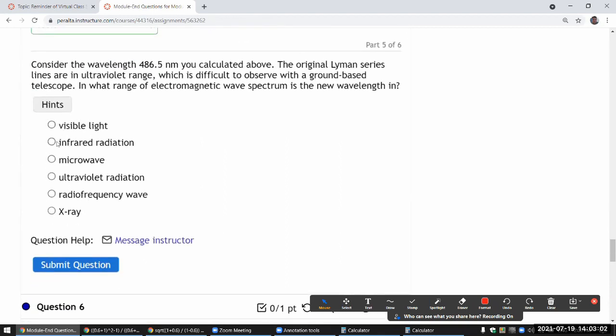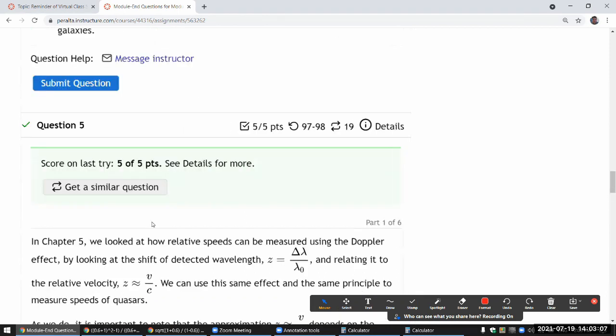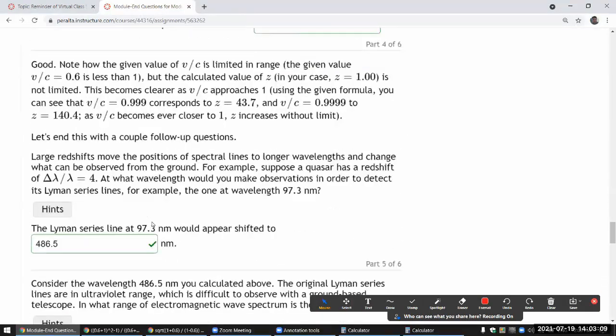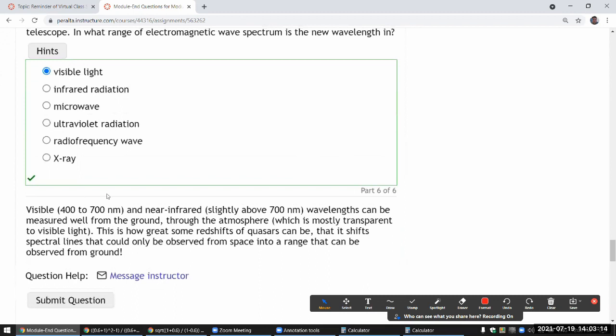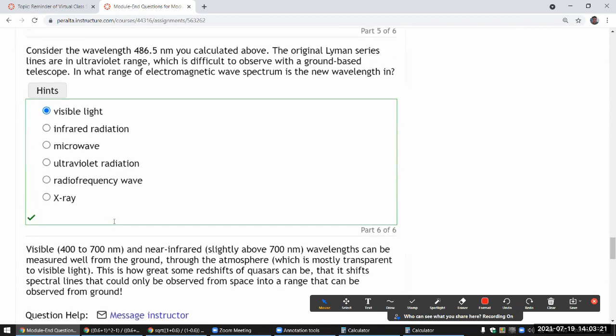Let me answer that so that I can open up part six, which is not a question, but it's just a final follow-up or feedback. So yeah, this can be measured well from ground through the atmosphere. So the Lyman series lines are originally ultraviolet. You can't really observe it well from ground, but if it's coming from quasar at its extreme redshifted value, you can actually see it as part of your visible light spectroscopy.